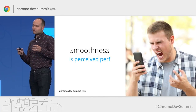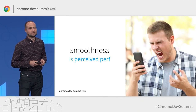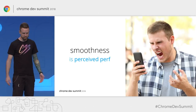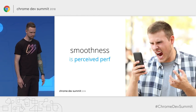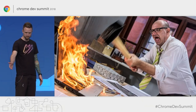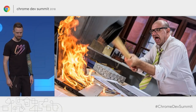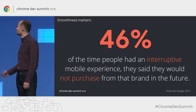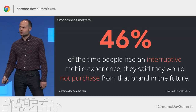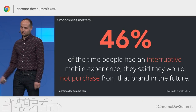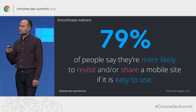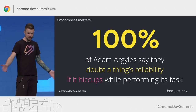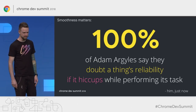Basically, smoothness relates to the human perception of performance. It's a measure of the question: is this application keeping up with me, or is it getting in my way? The way the user feels when interacting with software is really important. This is backed up by statistics too. In a 2017 study, 46% of people who had an interruptive mobile experience said they wouldn't purchase from that brand again. And in that same study, 79% of people said they're more likely to revisit or share a mobile site that was easy to use.